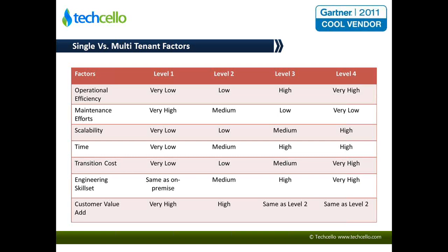Scalability: Level 1 is not scalable at all — you keep spending on infrastructure and repeating things. Level 4 is much better in that regard. Time-wise, Level 1 might take less time to build because you're not modifying anything — you take the functionality as-is and give it to the customer. But Level 4 involves building a multi-tenant architecture, which doesn't come out of the box. You have to build an architecture that can identify different tenants and work accordingly, which takes time before you can build your application on top of it.